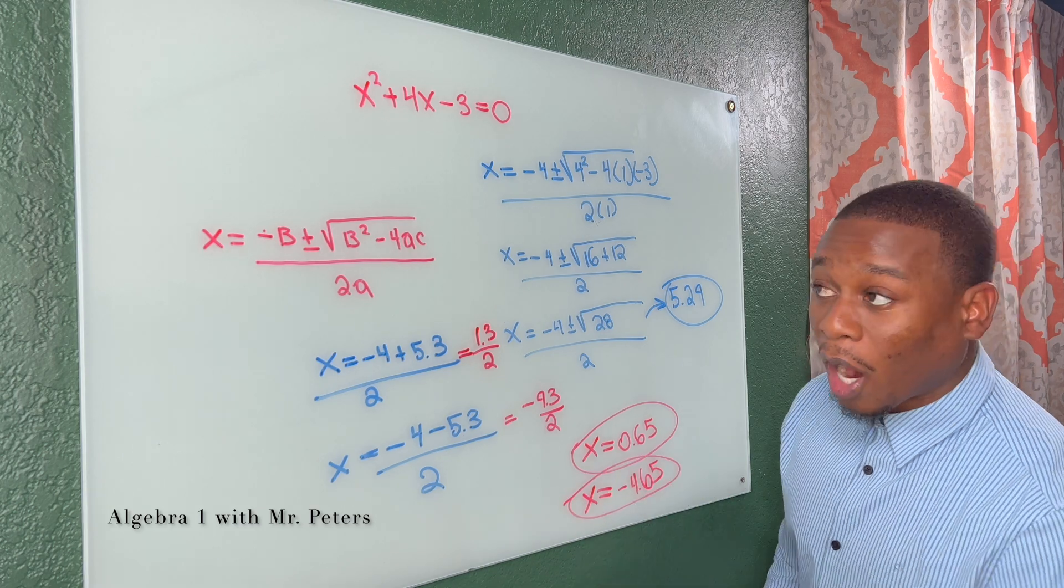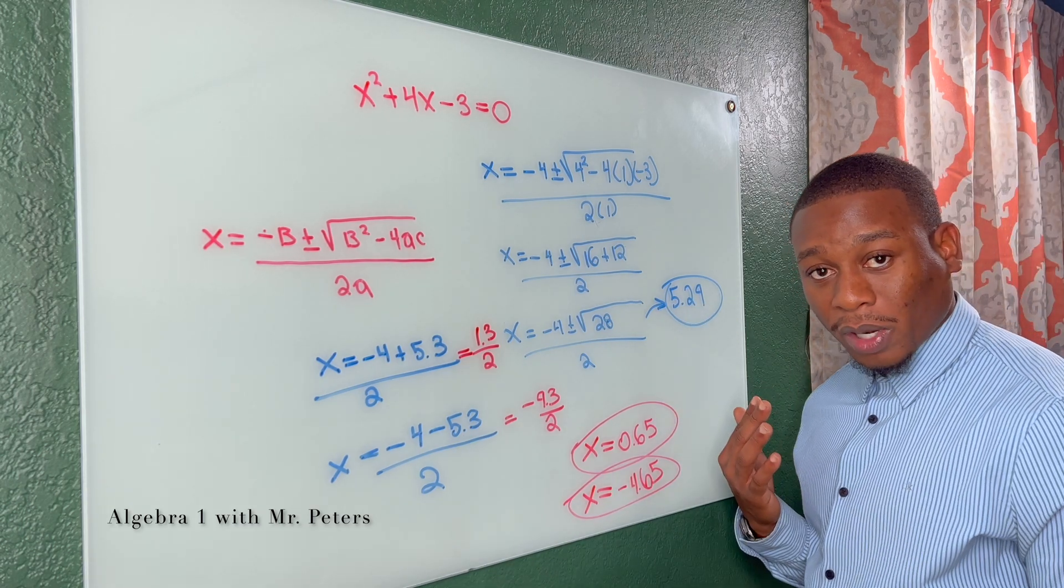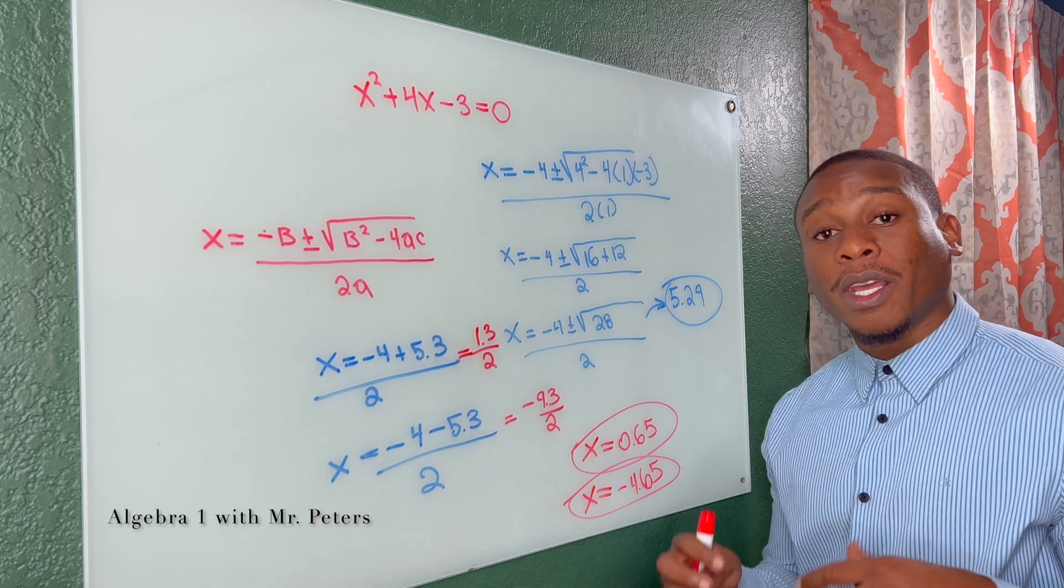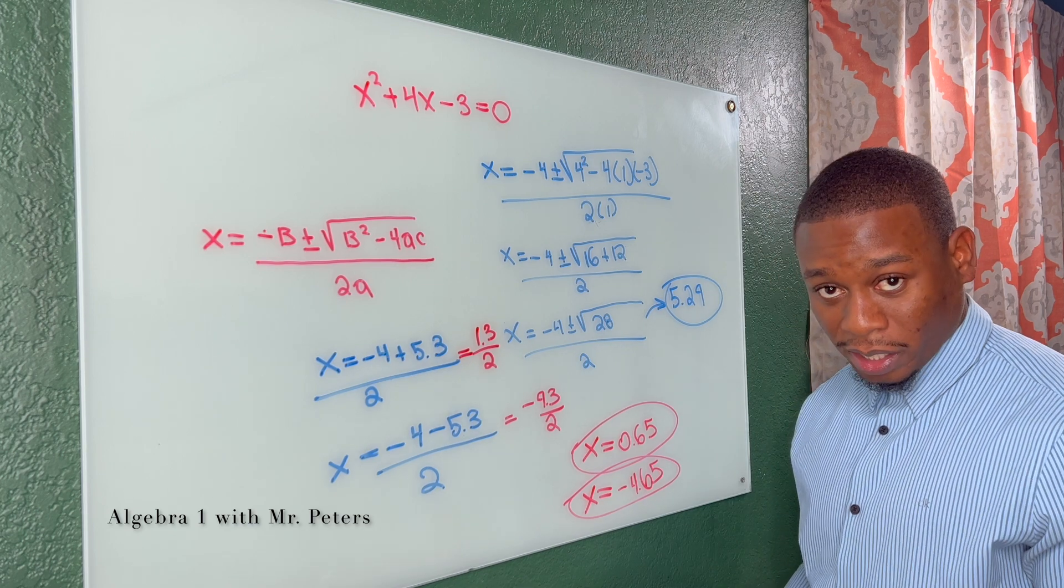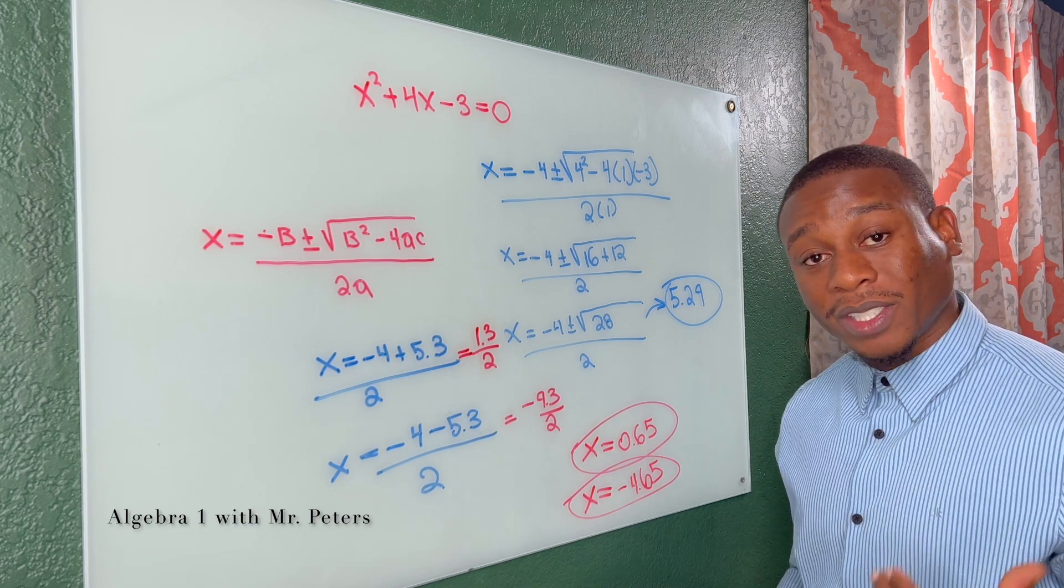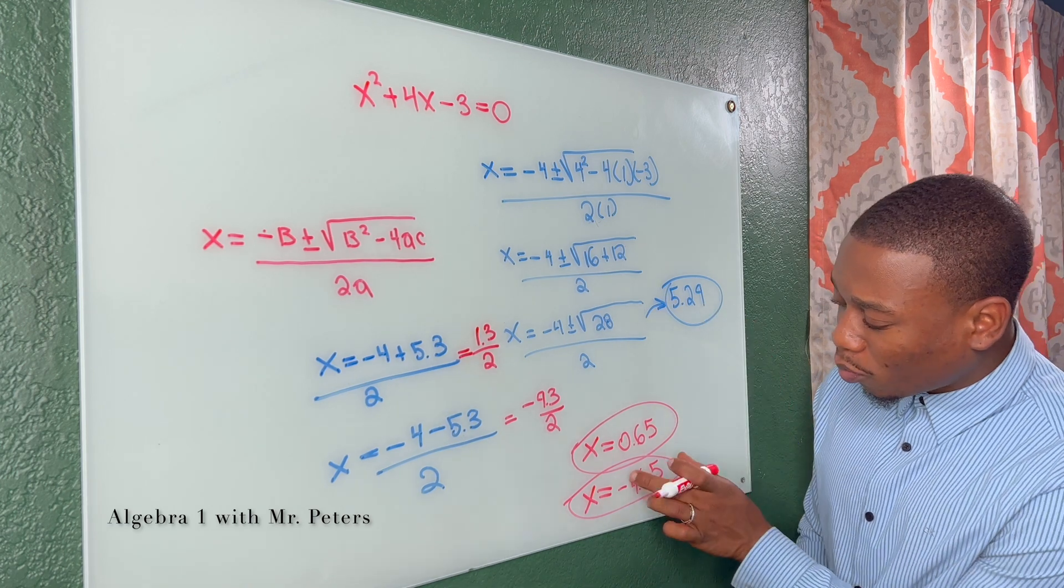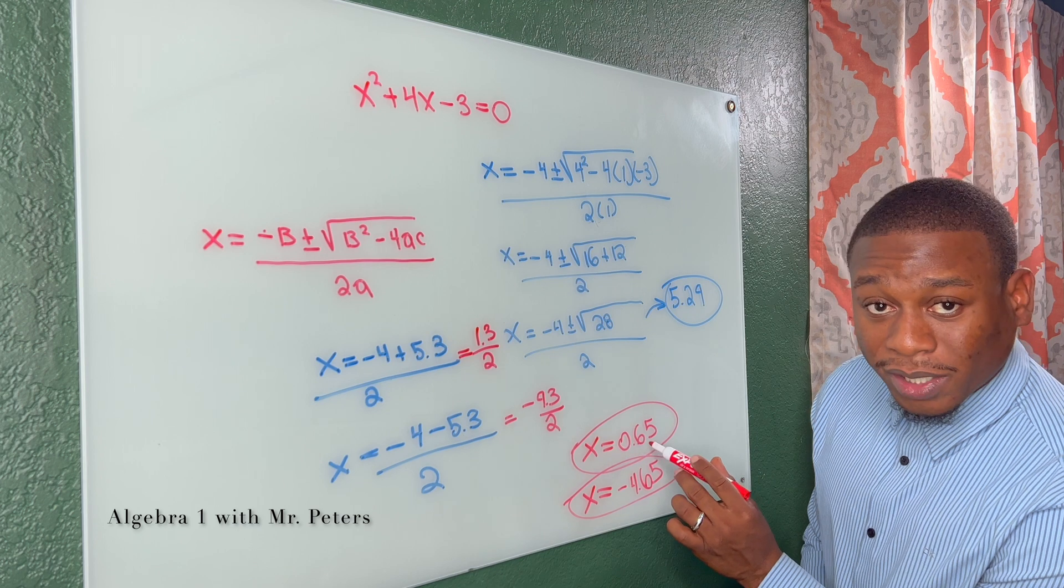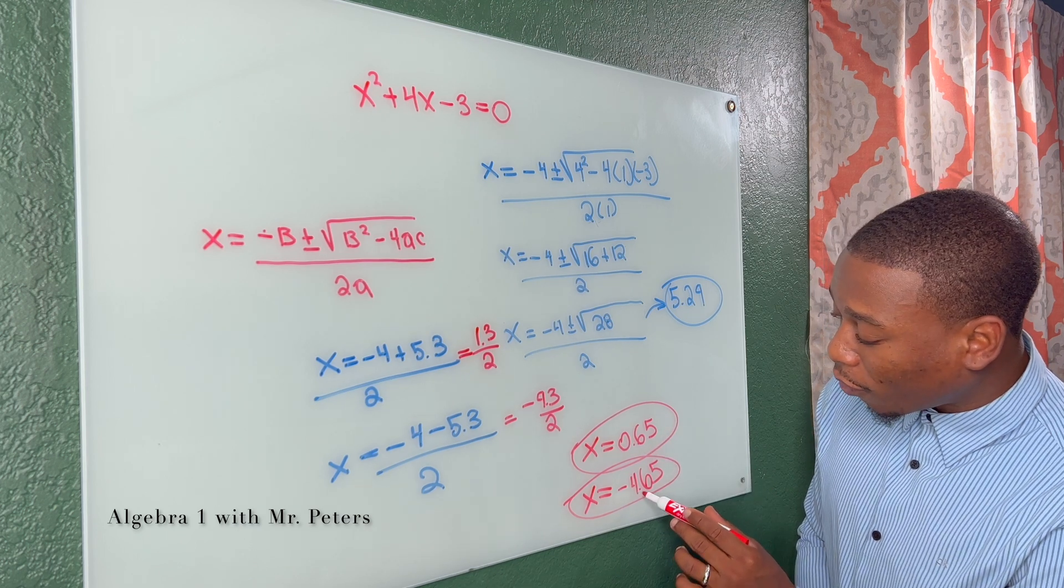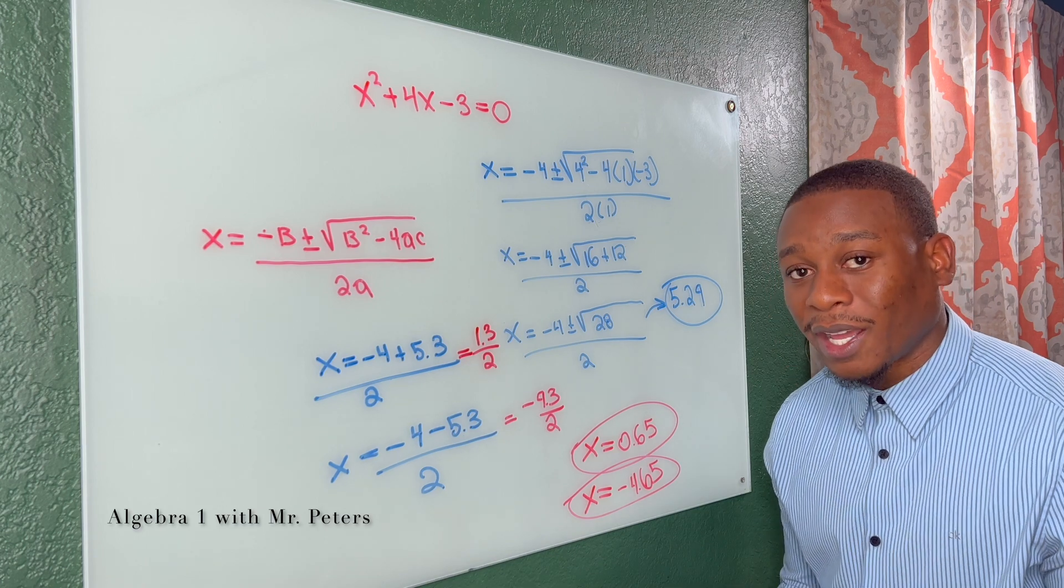We divide by two and we know our other x is equal to negative 4.65. And these are our two answers. So even if you did 5.29 or you rounded to 5.3, you're still going to get a very close answer. So let's make sure you round properly and you keep that round to the same. And this is what I mean. You see how we had one decimal point, now we have two, we can leave it at 0.65, 0.7, or we can leave this at 4.7 or just 4.65. So just understand that.